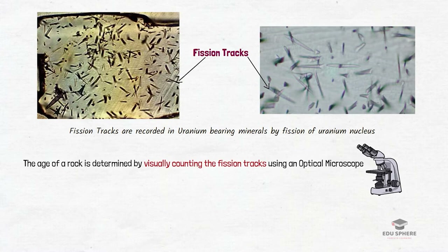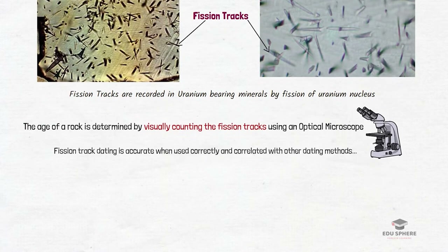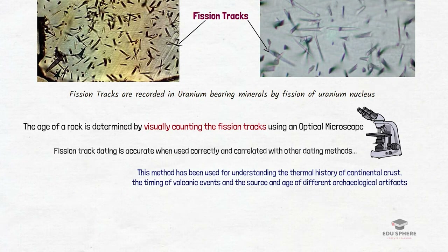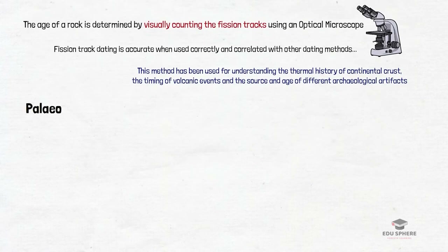This method is quite simple because we need to visually count the fission tracks already registered in the solids. Although this is an unusual radiometric dating process, fission track dating is accurate when used correctly and when results are correlated with other dating methods. This technique has made a significant impact on understanding the thermal history of continental crust, the timing of volcanic events, and the source and age of different archaeological artifacts.